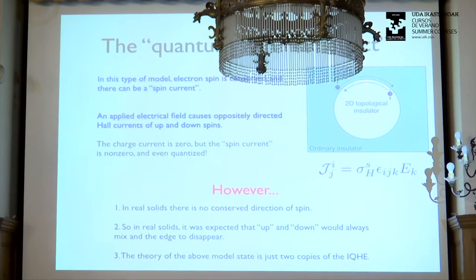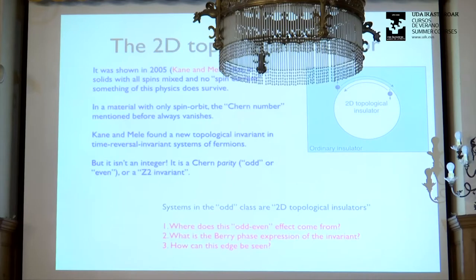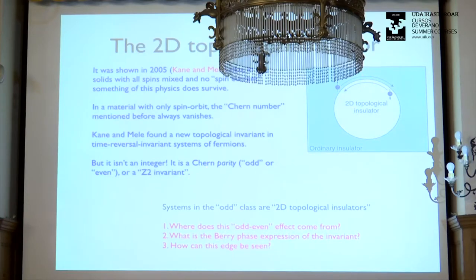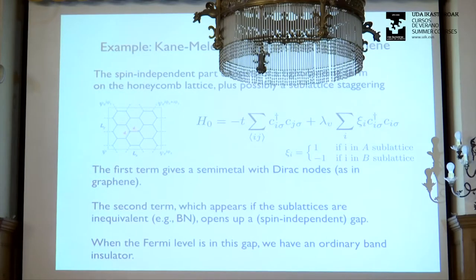This was originally called the quantum spin Hall effect — still a widely used name — but it's also the 2D topological insulator. Many of us thought this would not necessarily be a stable phase since all the previously existing topological invariants like the Chern number were zero. The key idea in the Kane-Mele work was that there's a new kind of topological invariant which is not an integer — it's either odd or even. I want to give a simple picture of where that comes from and then talk about 3D.